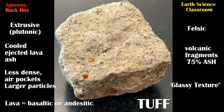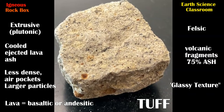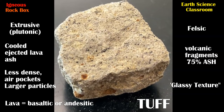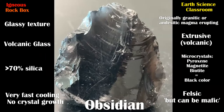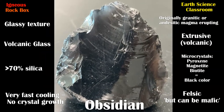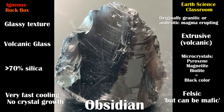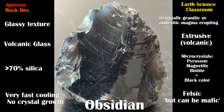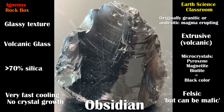Tuff is felsic and formed from the compaction of volcanic fragments out of an eruption. This is our classic extrusive rock that cooled very quickly — it's obsidian. It appears black due to the addition of smaller minerals like magnetite and biotite into the lava.